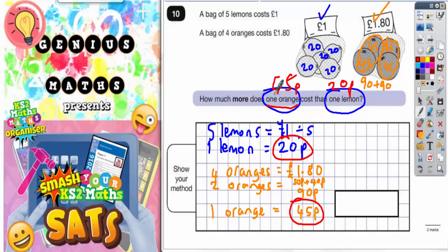In other words, how much more is 45p than 20p? But if you do 45 take away 20p, most of you can probably do this in your head, but if you find the difference, five take nothing is five, four take two is two.